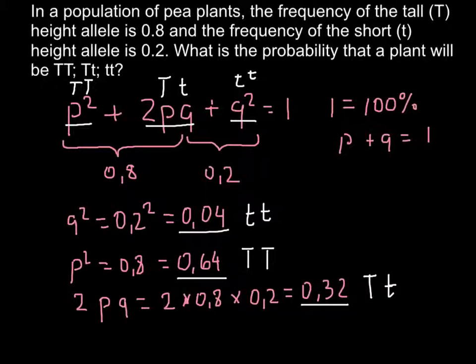We have all the answers. Now I hope you'll be able to solve this problem without any difficulty. By the way, we can check all these answers. We just add this number plus this number plus this number, and we should get 1. So 0.64 plus 0.32 is 0.96, plus 0.04 equals 1. This is exactly the number we expect.